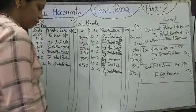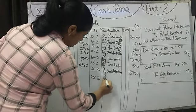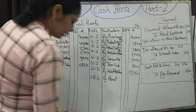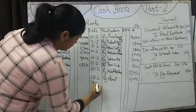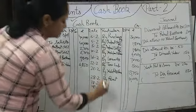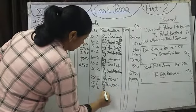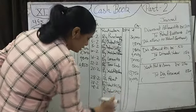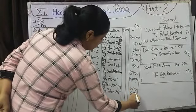Next transaction on 28th February: paid rent for godown. Money is going, so we write on the credit side — By Rent, amount Rs. 10,000. We are also paying GST with the rent, which is known as Input GST. By Input CGST and By Input SGST at 6% of Rs. 10,000 — that is Rs. 600 each.